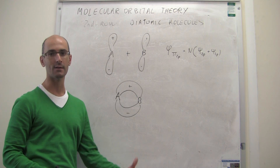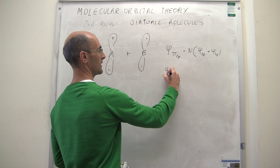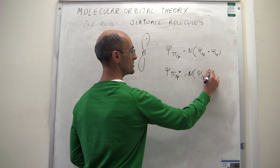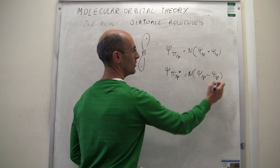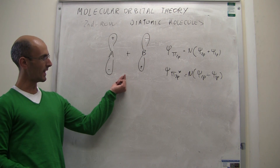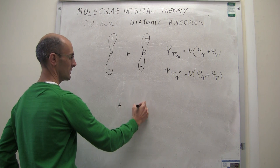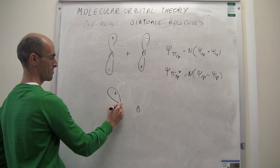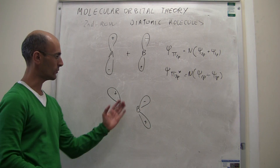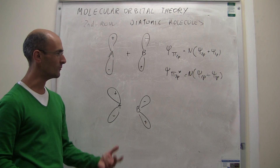For the pi antibonding orbital, Ψ(π 2p*) = N [ψ(2p) − ψ(2p)] — a coefficient of minus one in front of one of the orbitals, which effectively reverses the signs. These two waves interact destructively. The resulting molecular orbital has no electrons between the two atoms; there is a large nodal region, giving rise to an antibonding orbital.